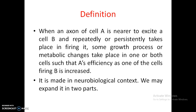What it exactly means is: when an axon of cell A is excited to excite cell B, and repeatedly and persistently takes part in firing it, some growth process or metabolic changes take place in one or both cells such that A's efficiency as one of the cells firing B is increased. That means if we take two cells A and B, and A is very near to B such that it can fire information on B every time repeatedly, then some growth process or metabolic changes will take place.